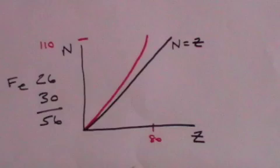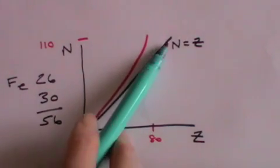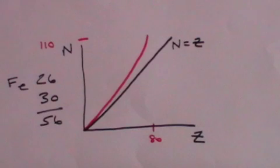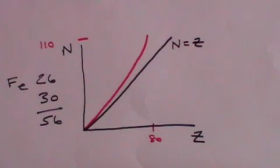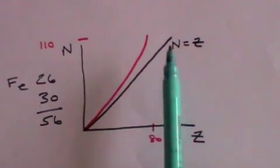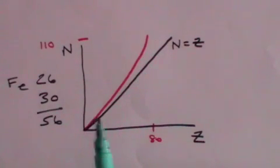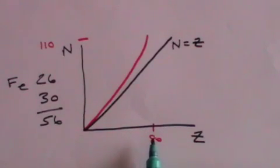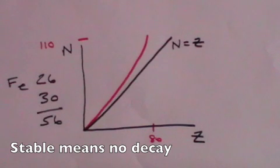You'll notice that the red line does not follow the N equals Z line. In other words, elements are not most stable when they have the same number of protons as neutrons. As we go towards the higher end of the elements, the number of neutrons in a stable nucleus will exceed the number of protons. For example, when you have 80 protons in a nucleus, you're likely to have about 110 neutrons in order for that nucleus to be stable.